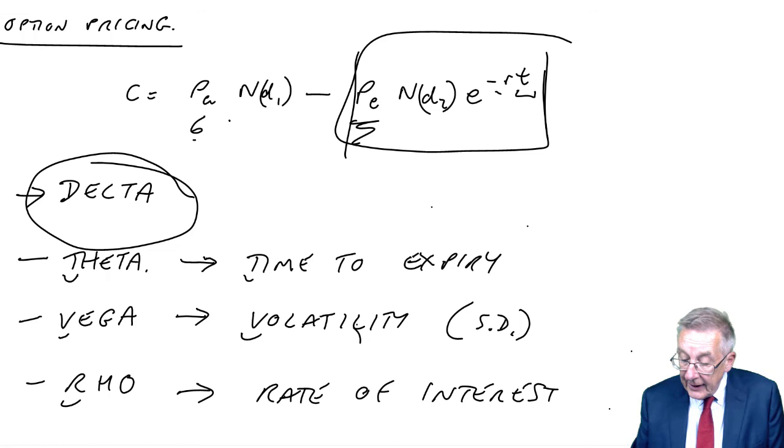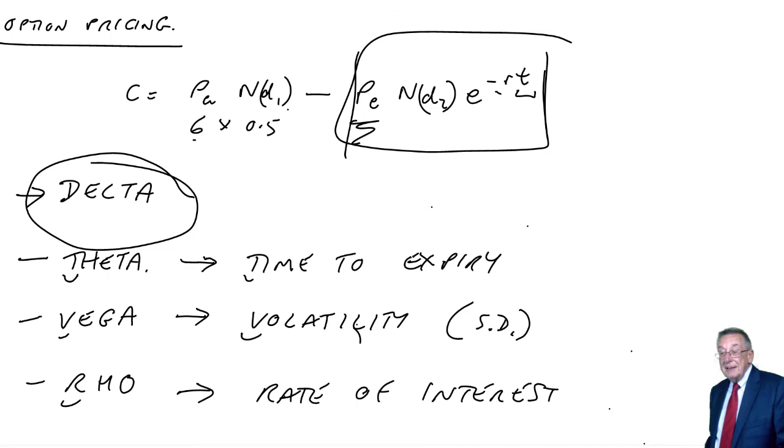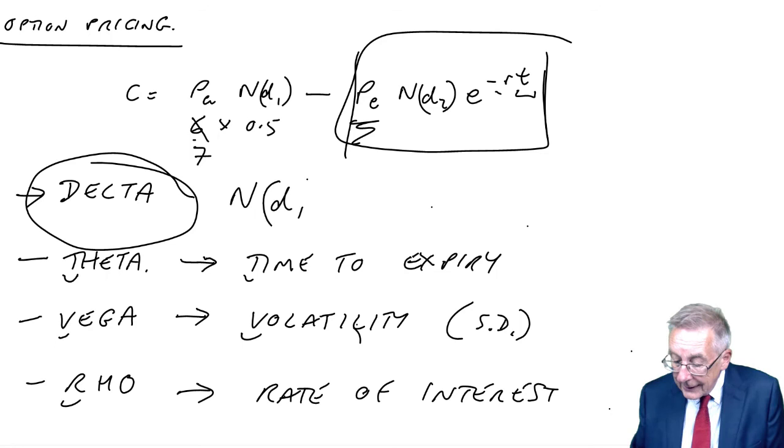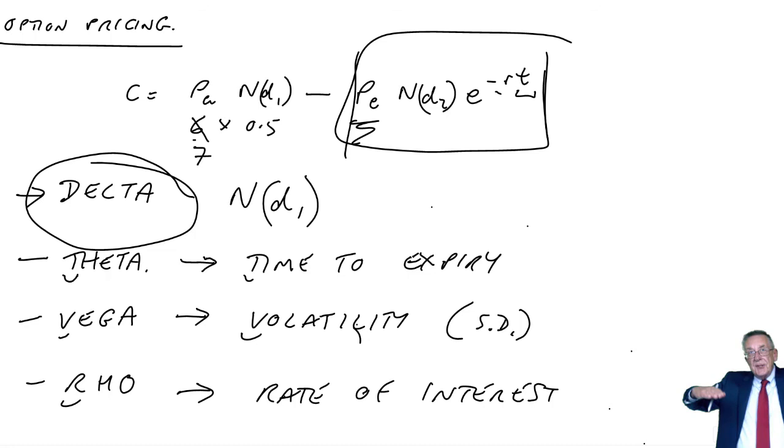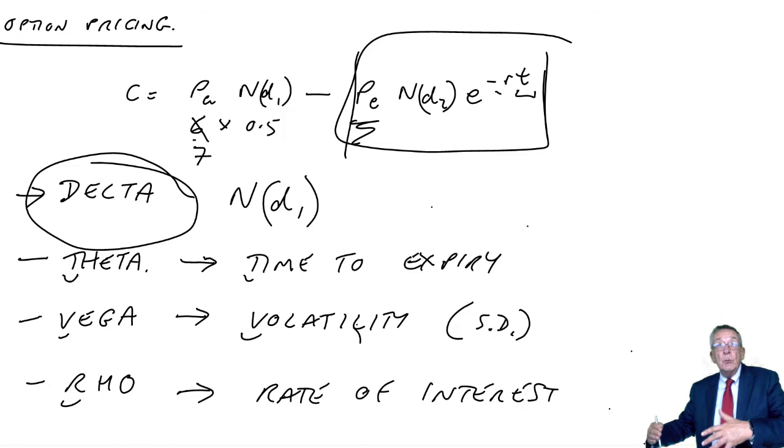As the share price changes, the rate of change in the premium will be ND1. If ND1 is 0.5, the premium is six times 0.5 minus all of that. If the share price goes to seven, the option premium is seven times 0.5 minus all of that. So the share price has gone up by one, the option price would go up by one times 0.5. So delta is ND1. As the share price changes, the change in the premium will be the change in the share price times ND1. Finally, we can make use of that in something called the delta hedge.